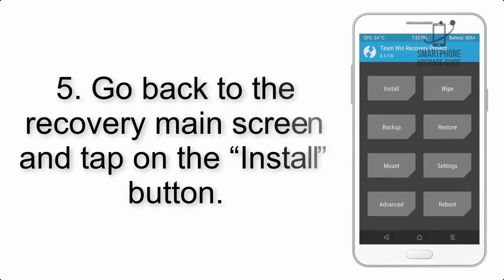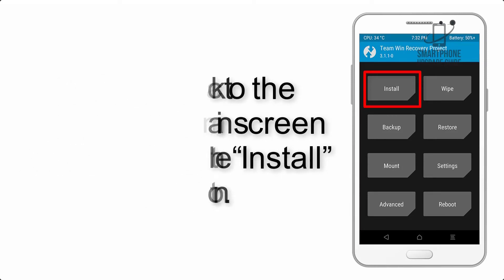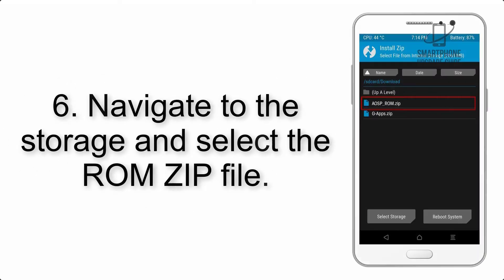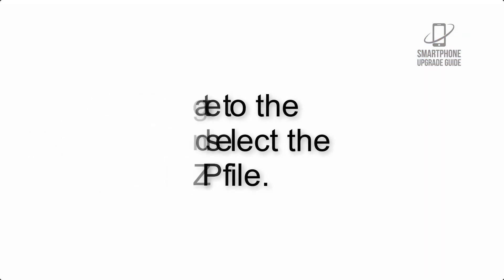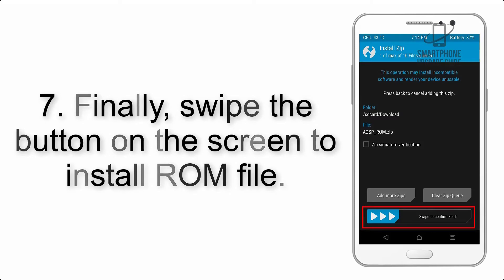Step 4: Swipe the button to wipe the device. Step 5: Go back to the recovery main screen and tap on the Install button. Step 6: Navigate to the storage and select the ROM zip file.